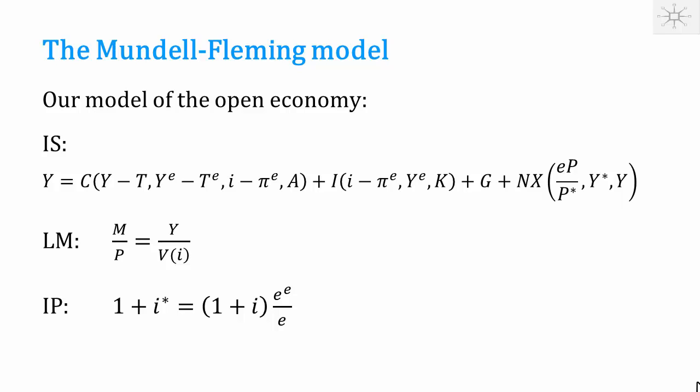Since we have three equations, we must have three endogenous variables. With a credibly fixed exchange rate, E and E-expected are exogenously given, and the interest parity condition says that the interest rate has to be the same as abroad. That means the central bank loses control over the money supply, so M is endogenous. With a fixed exchange rate, the endogenous variables are Y, I, and M.